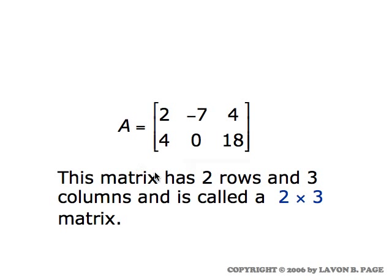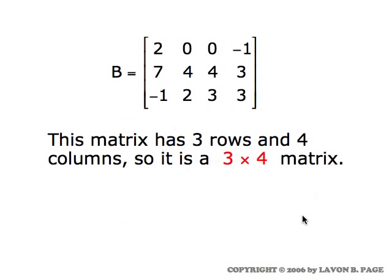This matrix has two rows and three columns, and so it's called a two-by-three matrix. Here's a matrix B which has three rows and four columns, so it's called a three-by-four matrix. It's important to keep in mind that when you're talking about the size of a matrix, the common convention always followed is to list the number of rows first and the number of columns second.